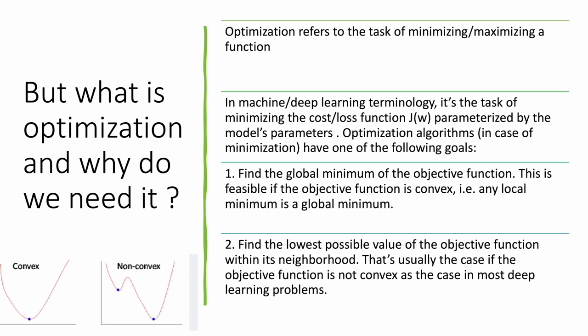Our cost or loss function is dependent on model parameters. So we are trying to optimize those model parameters — tweaking them in such a way that we are able to minimize our loss function. That's what optimization is.